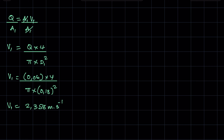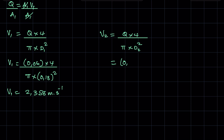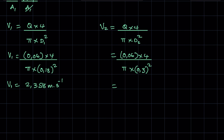To calculate v2 we use the same formula: v2 equals Q times 4 over (π times d2²). Q remains constant at 0.06, and d2 is 0.3 meters, so v2 equals 0.06 times 4 over (π times 0.3²), giving v2 equals 0.849 meters per second. So now we have both v1 and v2.